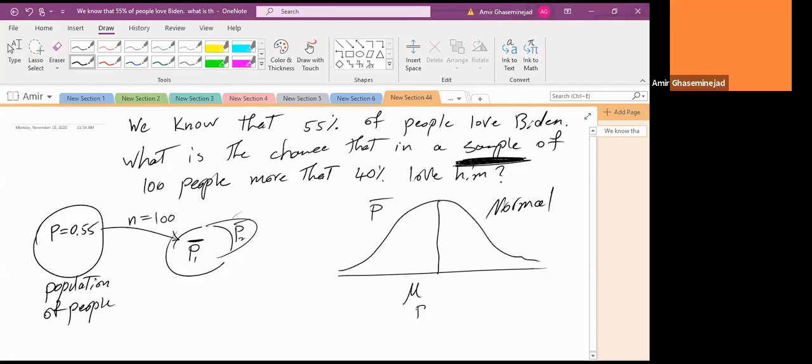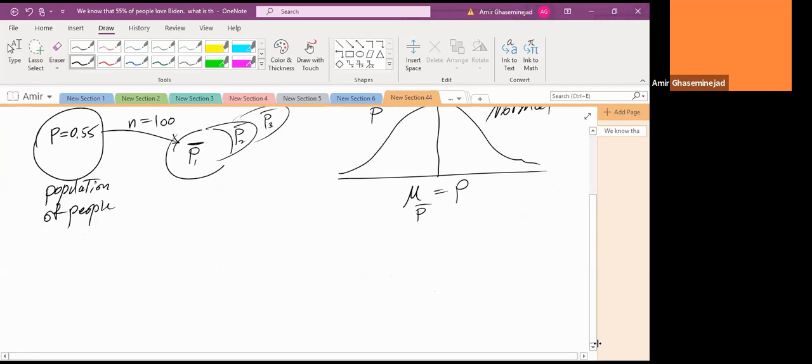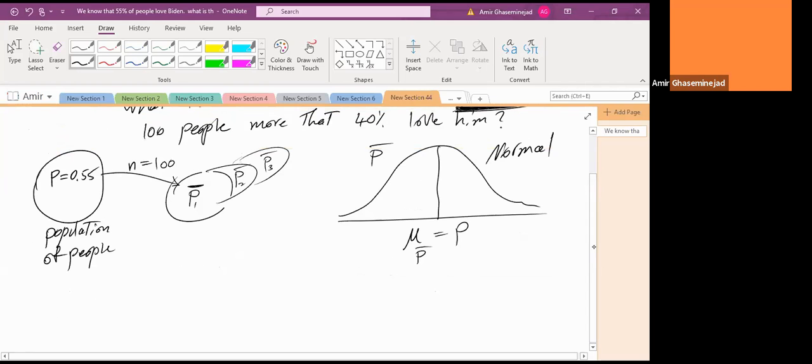The mean of all of the sample proportions is the proportion in the population. Obviously, like if this is 0.54, this is 0.55, next one is 0.56. If we average all of the sample proportions, all of them are taken from this population. So the average of all of them would be the proportion in the population. Again, it can be proven mathematically. And the standard deviation of sample proportions, it turns out that it would be p multiplied by 1 minus p divided by n.